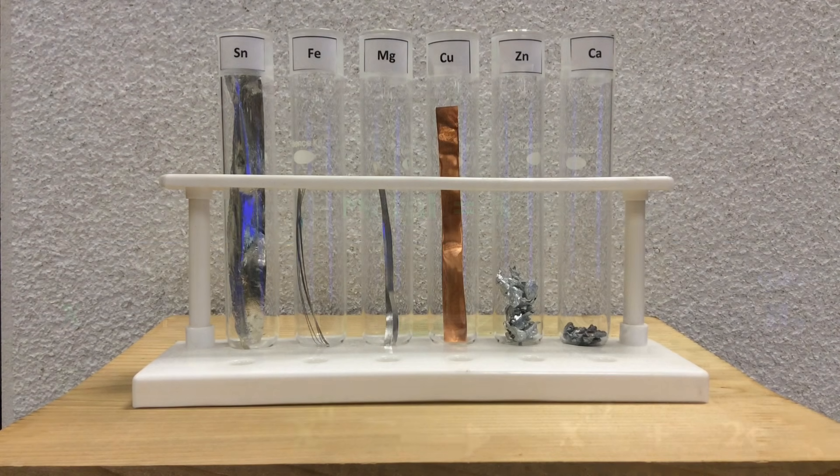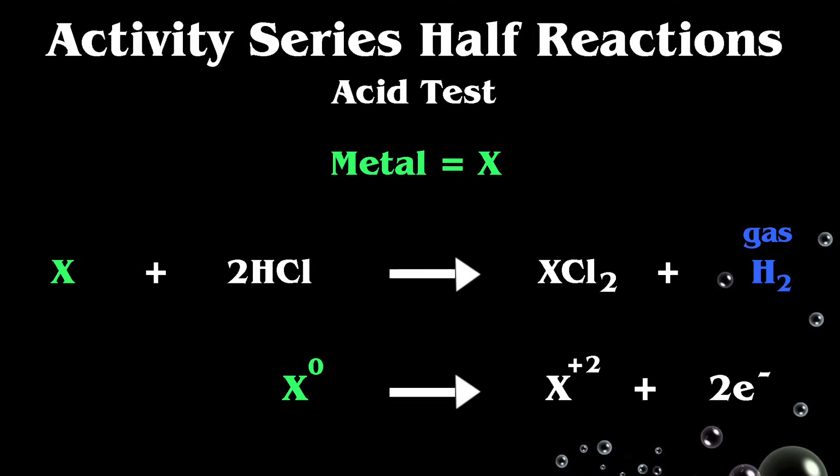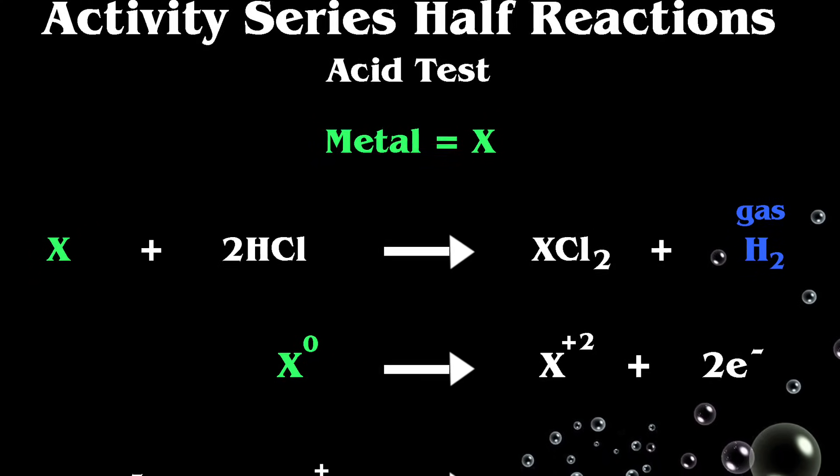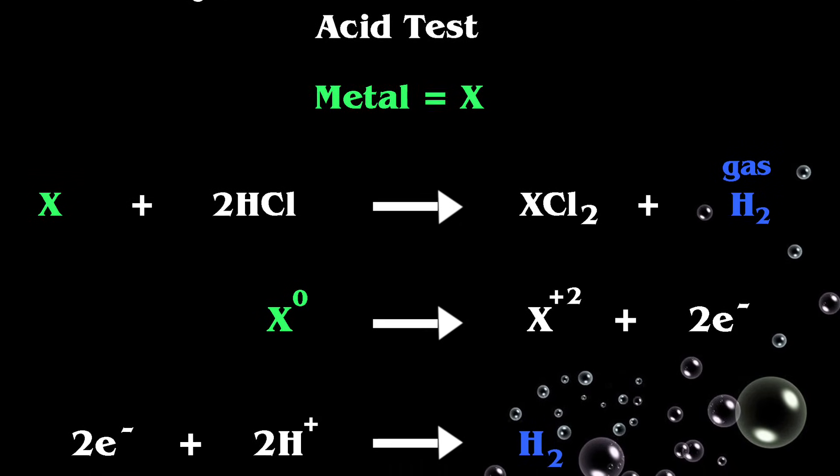The first test, we're going to use hydrochloric acid, which is going to dissociate into free protons. And we're going to see how well the metal can give its electrons to the H pluses, the protons.